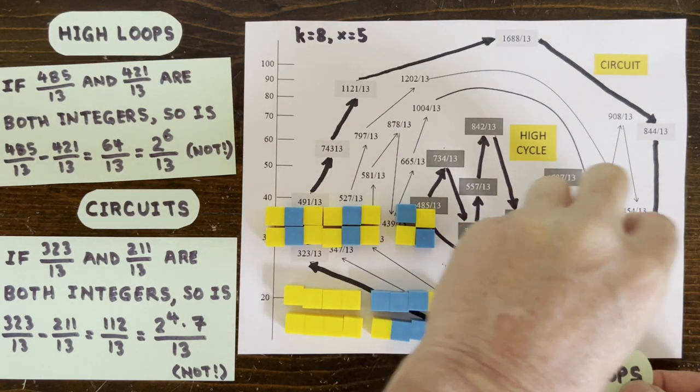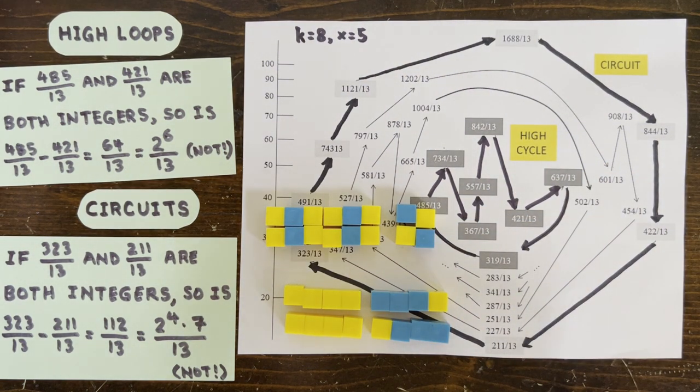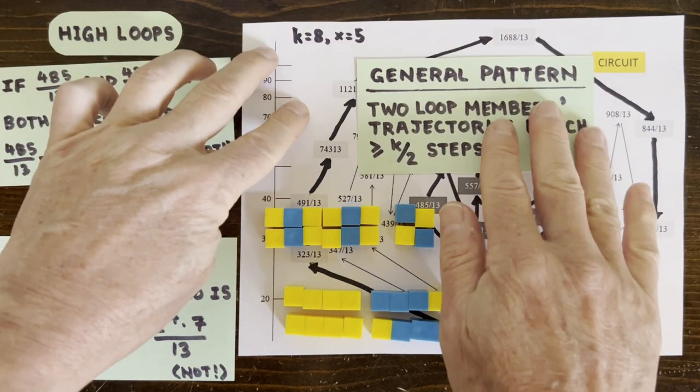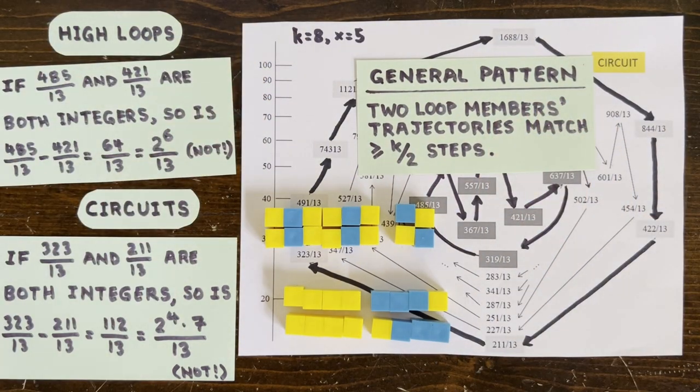So what's the general rule? Well, it's that if we can find two members of a loop whose trajectories match for at least half the length of the loop, then they can't be integers. So it's really satisfying that circuits and high loops and regular loops all have this same property. And this is really what's behind it all.